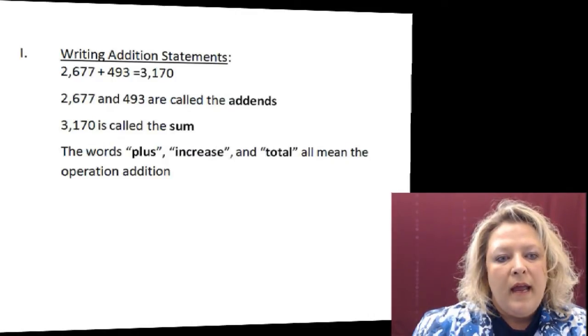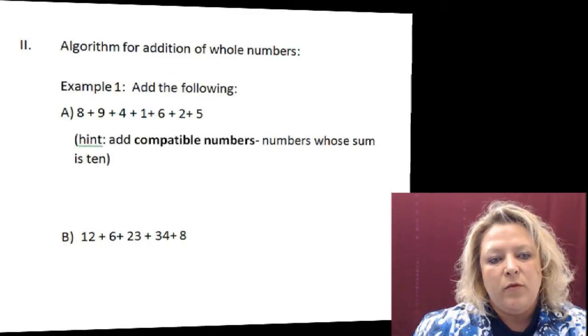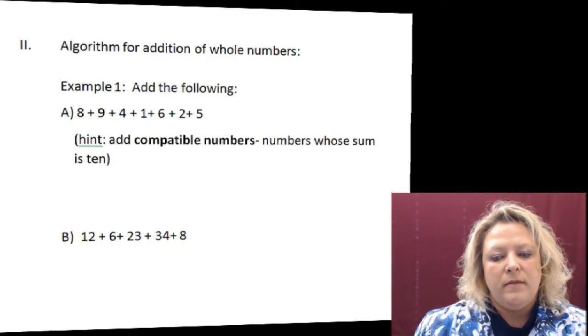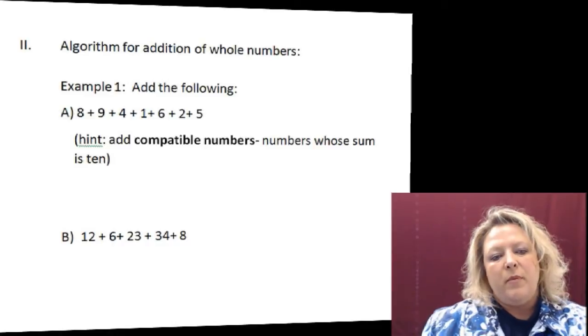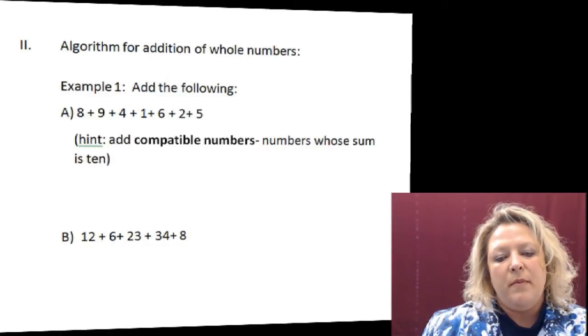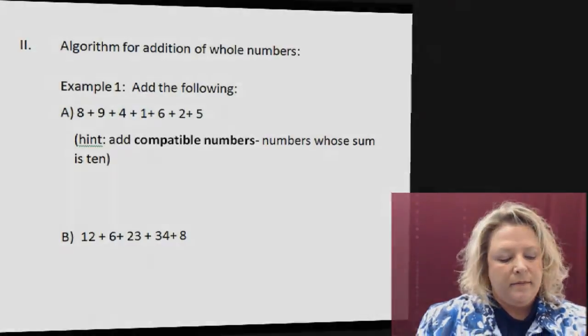We are fixing to work some examples and the first one we're going to work is about compatible numbers. Compatible numbers are numbers whose sum equals a group of ten.